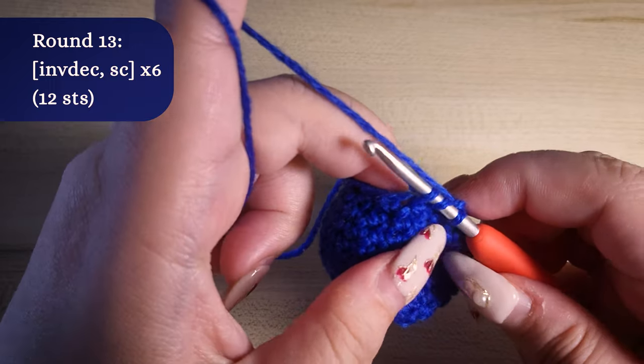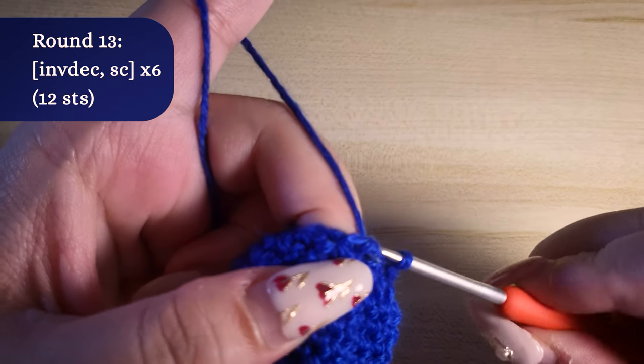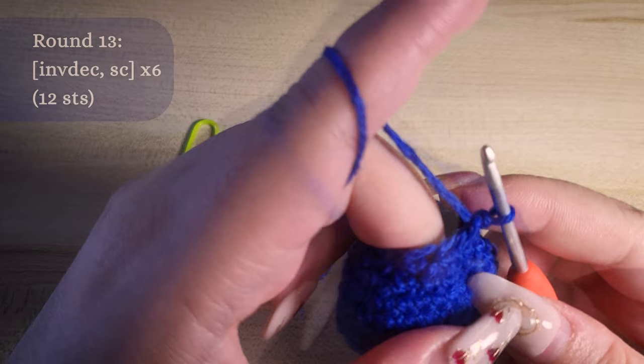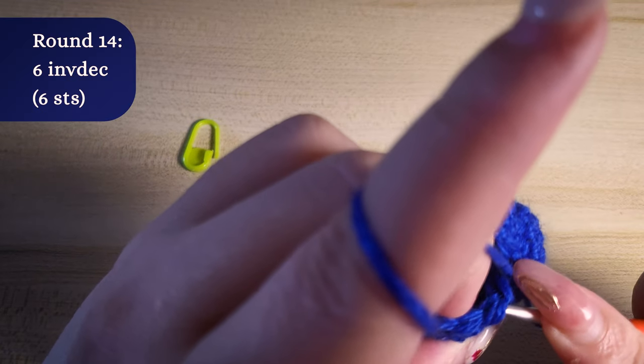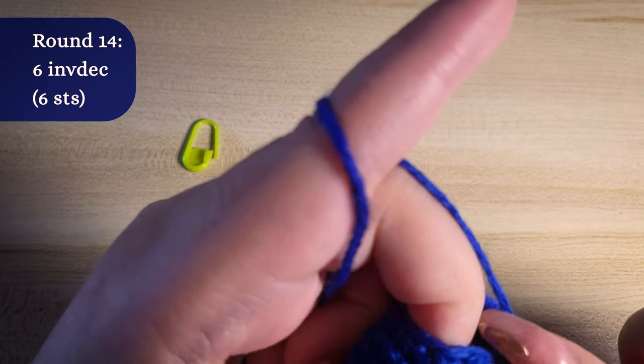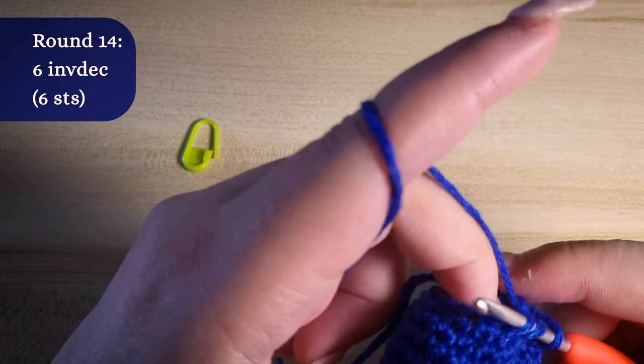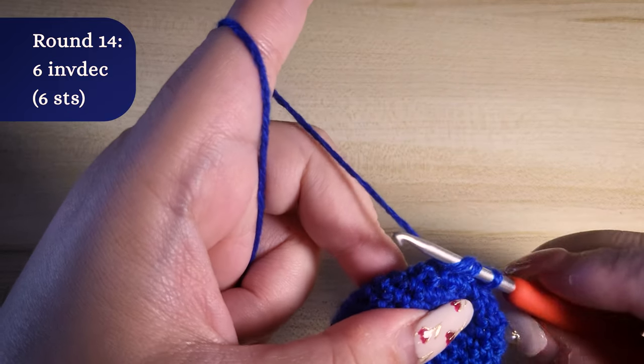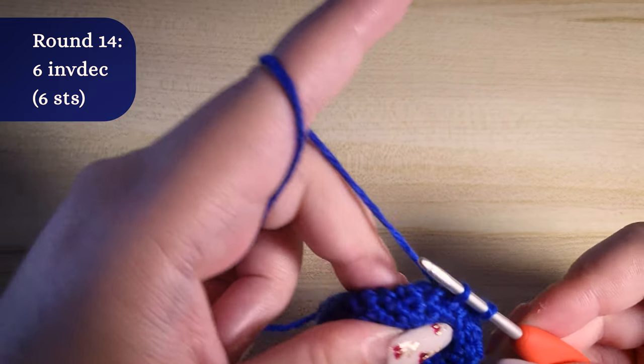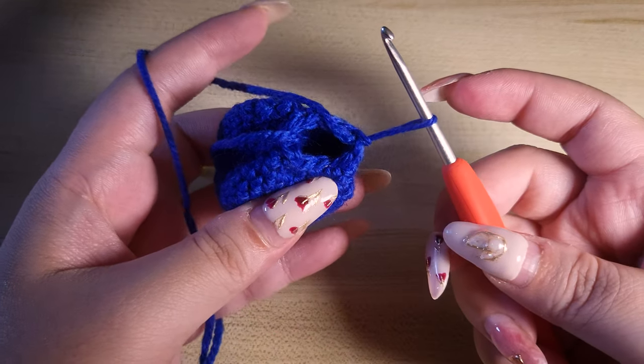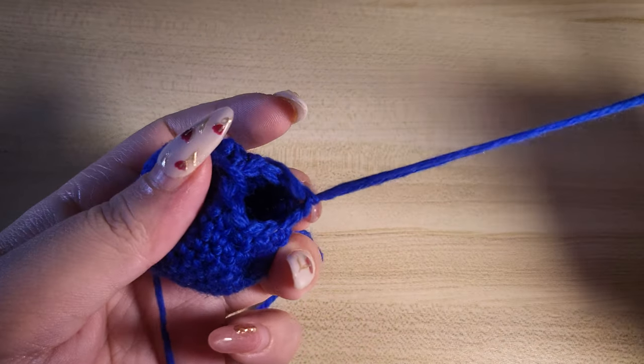Round 13, invisible decrease then single crochet. Repeat this pattern six times in total. We will end up with 12 stitches at the end of the round. Round 14, six invisible decrease. We will have six stitches at the end of the round. This is our last round. Pull yarn through and leave enough tail for seaming the hole.